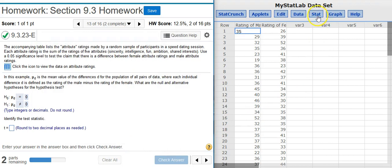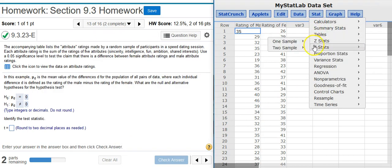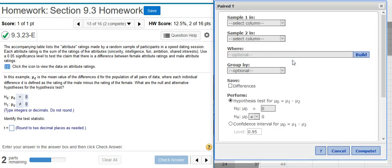And now in StatCrunch, I'm going to go to Stat, T Stats, Paired. In the options window, I'm going to tell StatCrunch where to find my data. Notice with the paired sample option, I don't have the ability to do the test with anything but actual data. So I can't provide a summary of statistics in order to do the test. I have to have actual data. That's just part of the way that the software was coded. We actually do have actual data, so it's not a big problem.